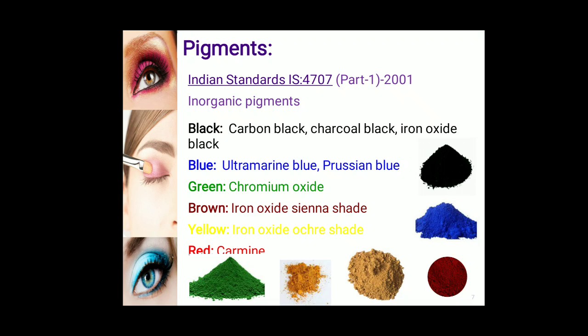As per the Indian standard IS 4707, Part 1, 2001, there are different pigments that can be used in eye cosmetics. Specifically, black colors include carbon black, charcoal black, and iron oxide blacks. Blue colors include ultramarine blue and Prussian blue. Green color is chromium oxide. Brown color is iron oxide in sienna shade. Yellow color is iron oxide in arc shade. Red color — carmine can be used.